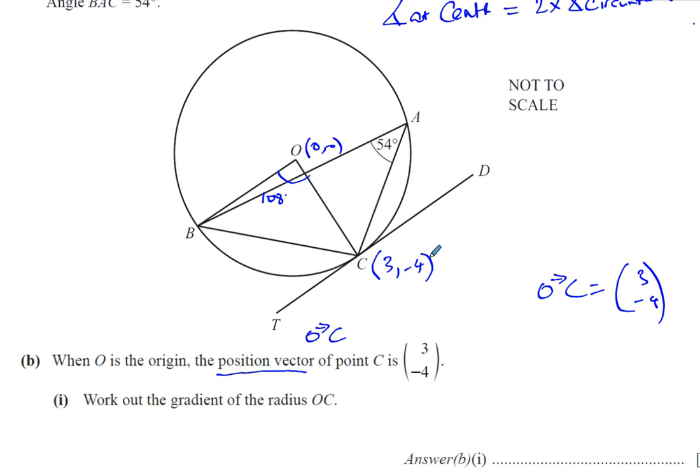I know how to find the gradient between two points. It's going to be -4 minus 0, the change in y, over 3 minus 0, the change in x, which gives you -4/3. That's the gradient between those two points. You could also think of it as the gradient is the change in y over the change in x, which is -4 over 3.